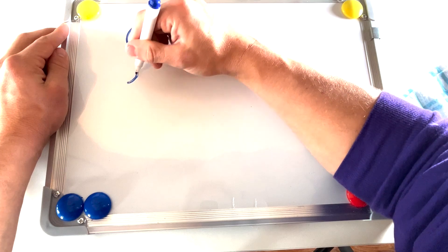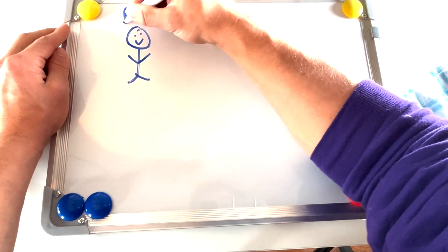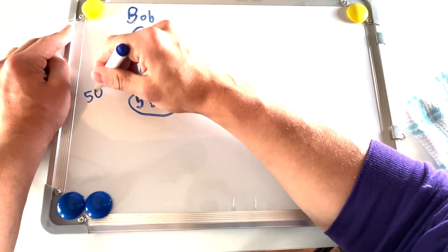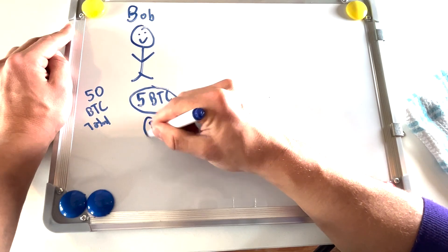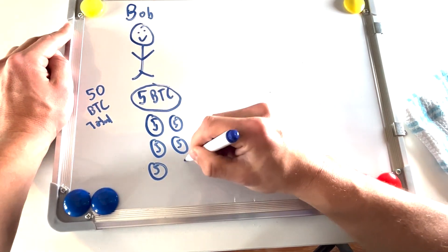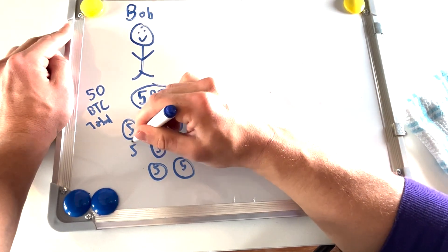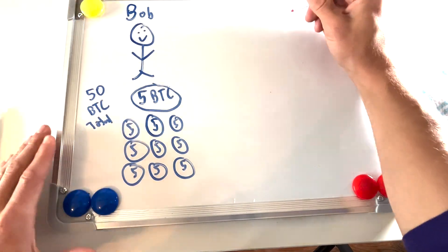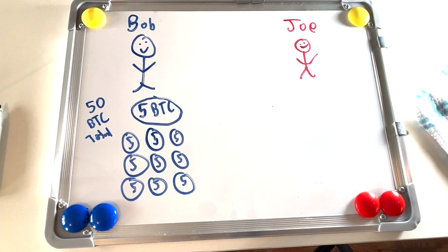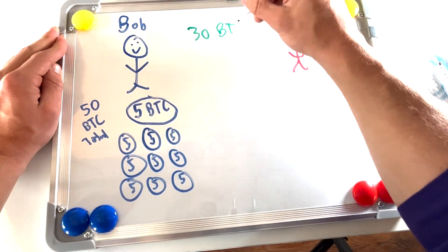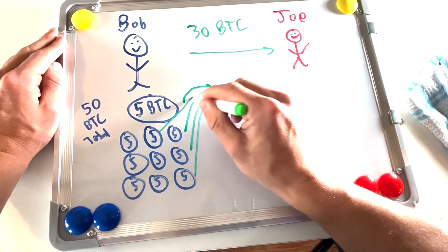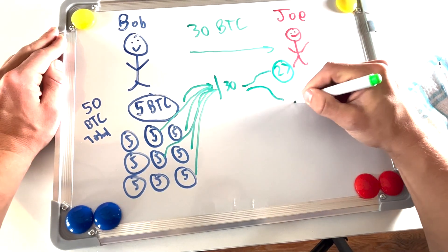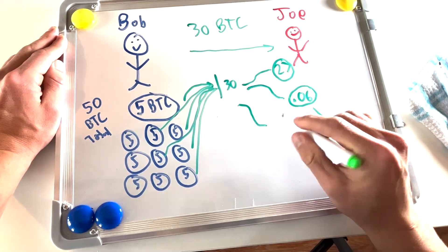Let's go back to our example of Chad and Bob. Bob now has a 5 Bitcoin UTXO that he received from Chad. Let's imagine that Bob runs a consulting business and he charges 5 Bitcoin for his services. So on top of this 5 Bitcoin UTXO he got from Chad, he has nine other 5 Bitcoin UTXOs that he got from other clients, so his total Bitcoin balance displayed in his wallet software is 50 Bitcoin. Now let's say Bob wants to buy a house from Joe that costs 27 Bitcoin. The network doesn't subtract 27 from 50 — it selects enough UTXOs as inputs in order to send the 27 Bitcoin.